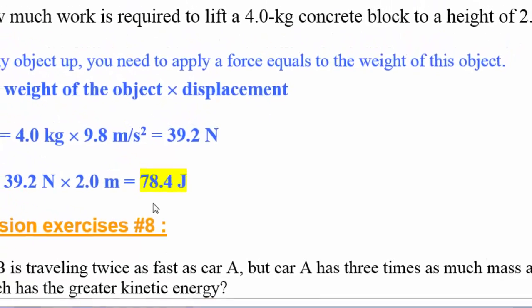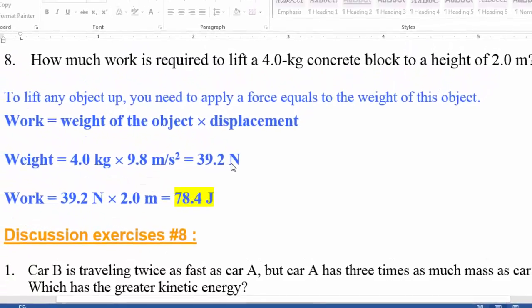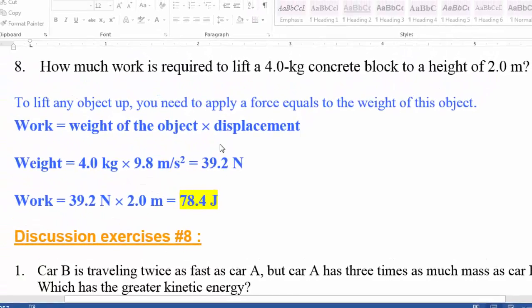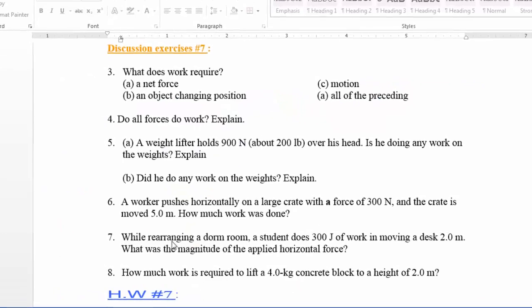Four kilograms times 9.8 yields 39.2 Newtons — that is the force needed to lift the object, which equals the weight. We then find the work by multiplying the force by the distance of two meters, yielding 78.4 joules.